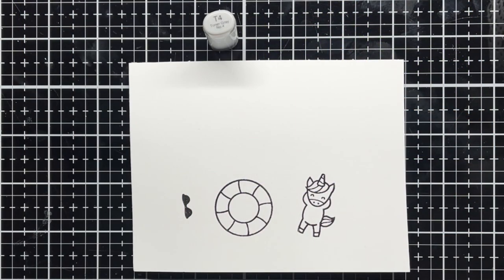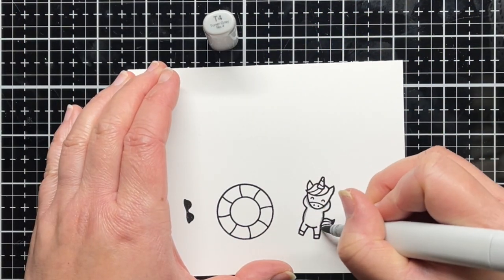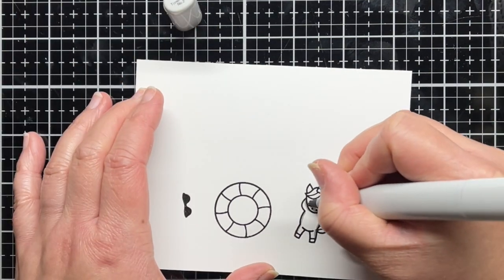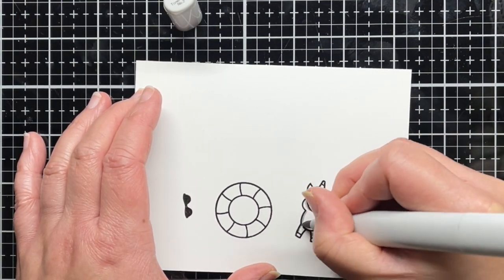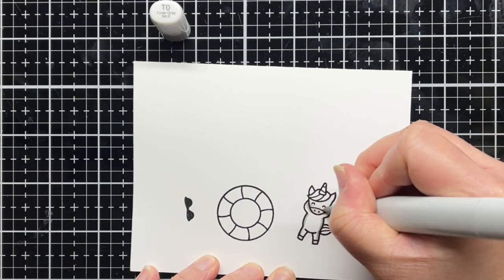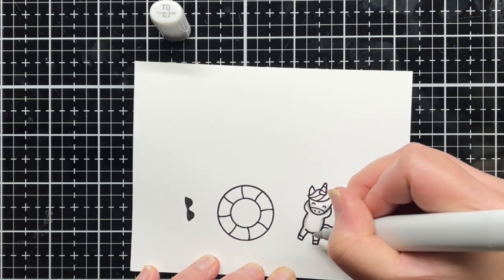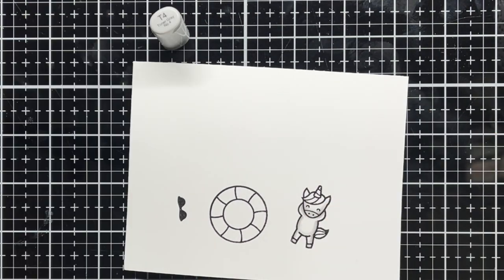First I stamp a few images from Pool Party onto white cardstock with Versafine and heat emboss them with clear embossing powder. Off camera I also stamp a sentiment from the same set onto black cardstock and heat emboss it with white embossing powder before trimming it down to a thin label.